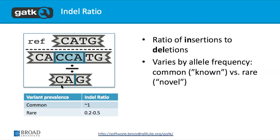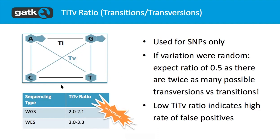The ratio of insertions to deletions: deletions are easier and thus more prevalent. The common ratio is about one-to-one, but in some cases you'll see rare variations at about one-to-two to one-to-five. This is because the rare variants haven't had time to be subjected to selective pressure.